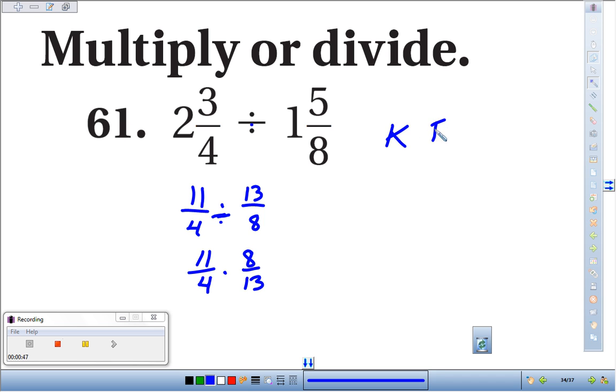Or how I like to remember it is KFC. Keep the first fraction, so we kept 11 fourths. Flip the second fraction, 13 eighths flipped as 8 thirteenths. And then change the symbol from division to multiplication.